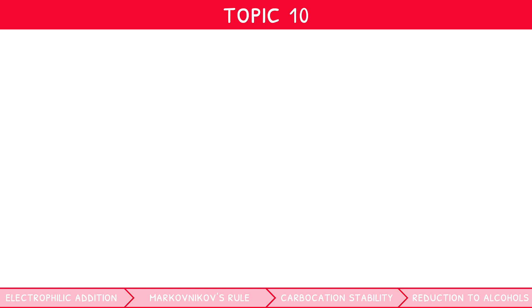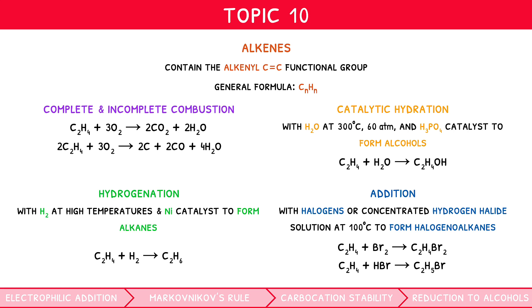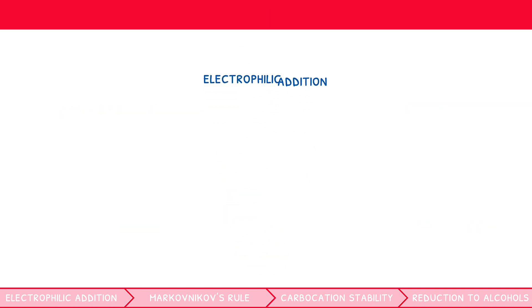In the third video of that series, we introduced addition reactions of alkenes with concentrated hydrogen halides and diatomic halogens. We mentioned these both take place via the mechanism known as electrophilic addition, and that at higher level you are expected to recall it.